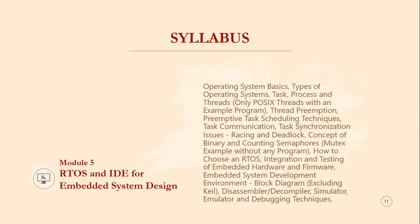Module 5 covers RTOS and IDE for embedded system design. Topics include operating system basics, types of operating systems, tasks, processes and threads with a POSIX threads example, thread preemption, preemptive task scheduling techniques, task communication and synchronization issues such as racing and deadlock, binary and counting semaphores with a mutex example, how to choose an RTOS, integration and testing of embedded hardware and firmware, the embedded system development environment with a block diagram, and disassembler, decompiler, simulator, emulator, and debugging techniques.